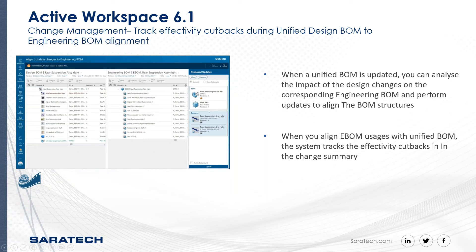Now we will talk about the second feature: the track effectivity cutback during the unified design BOM to an engineering BOM alignment. When a unified design BOM is updated, you can analyze the impact of the design change on the corresponding engineering BOM and perform the effect to align the BOM structure. When you align the e-BOM to a unified design BOM, the effectivity cutback is tracked in the change summary. Now let's watch a quick video for this feature.